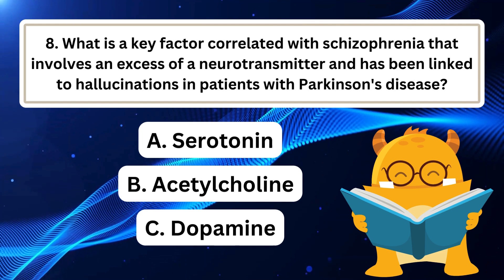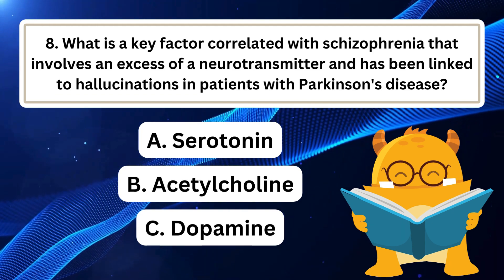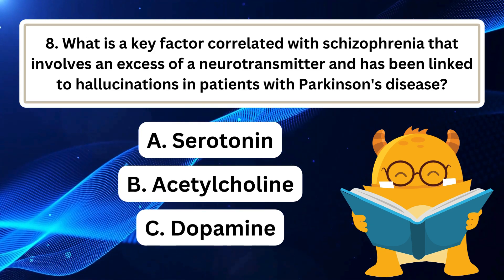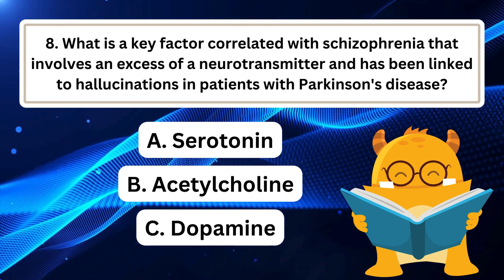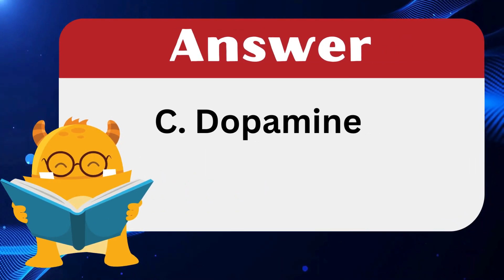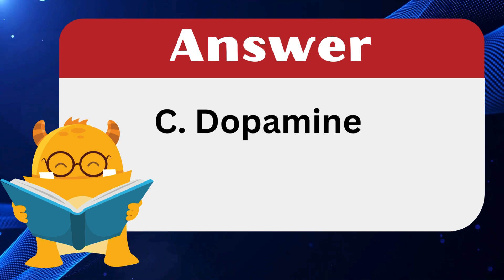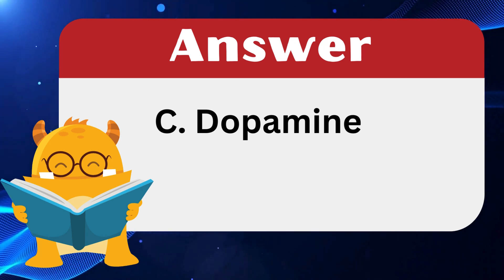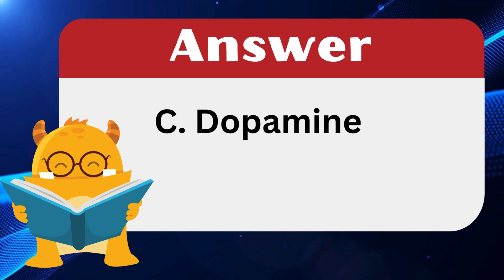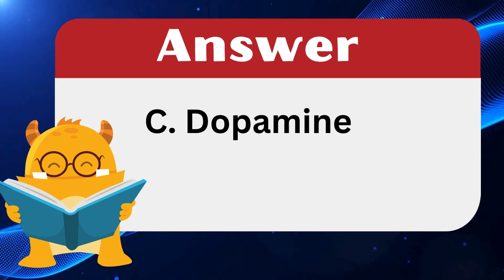Question 8: What is a key factor correlated with schizophrenia that involves an excess of a neurotransmitter and has been linked to hallucinations in patients with Parkinson's disease? The answer is C: Dopamine. Schizophrenia is correlated with an excess of dopamine, a neurotransmitter in the brain. This has been observed in patients with Parkinson's disease who experience hallucinations when taking medications that increase dopamine levels. Serotonin and acetylcholine are not specifically linked to schizophrenia in the same way.